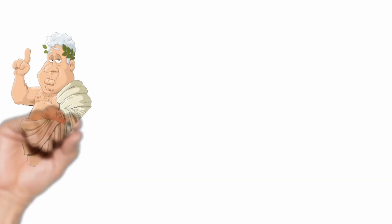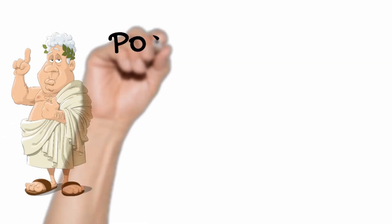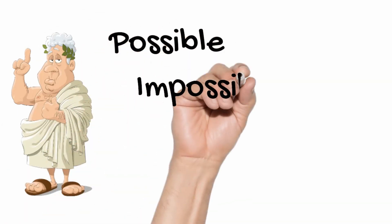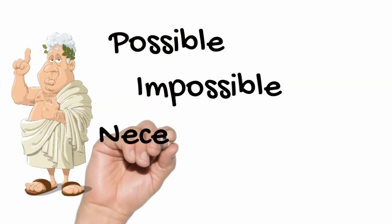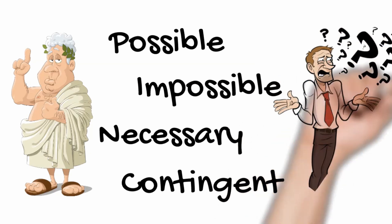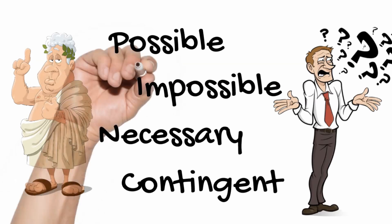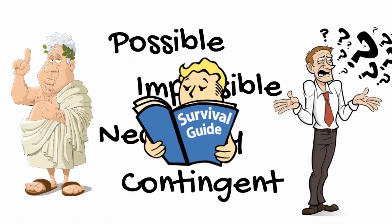Philosophers often speak using specialist terminology. Some terms they often use are possible and impossible, necessary and contingent. But what on earth do these things mean? As you'll see, there are many different things they could mean, and so you can think of this video as a guide to understanding the different ways these terms are used.